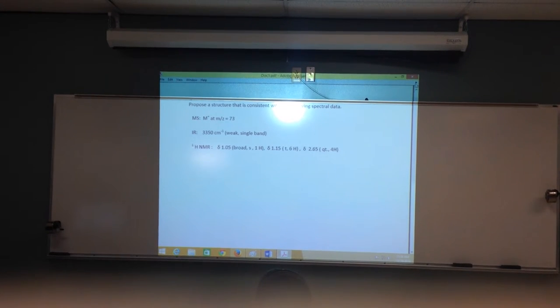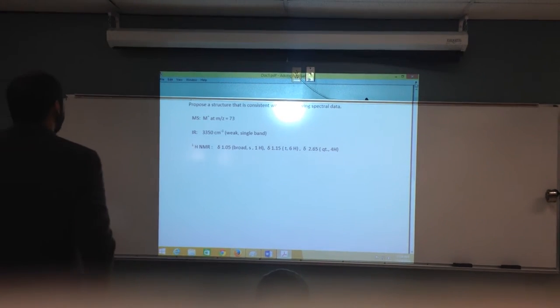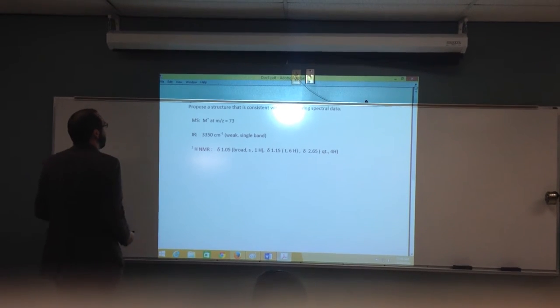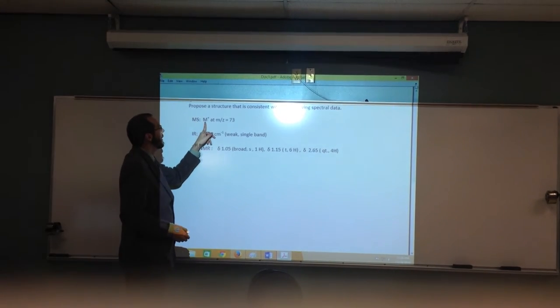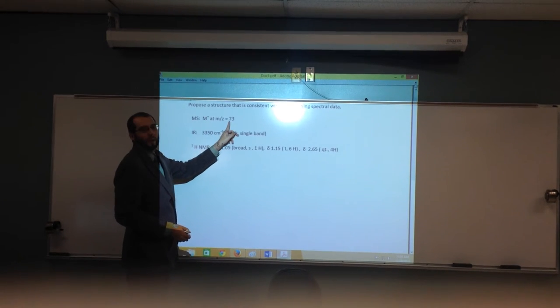So let's try this one. This one is essentially an NMR problem, but we've also got mass spec and IR alongside with it. So it says here that the mass spec, the M plus peak at MZ equals 73.